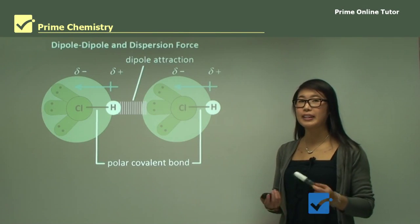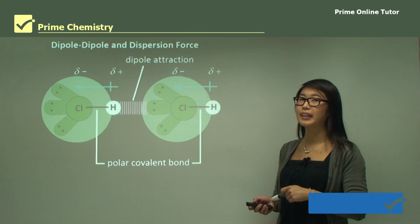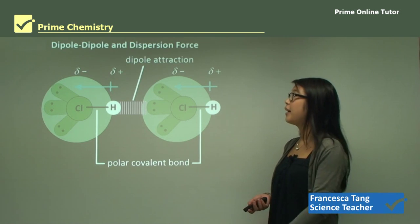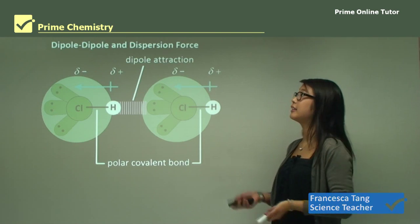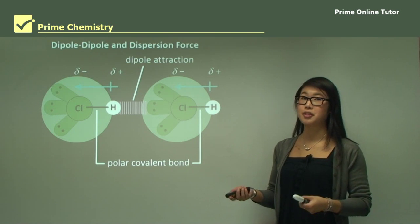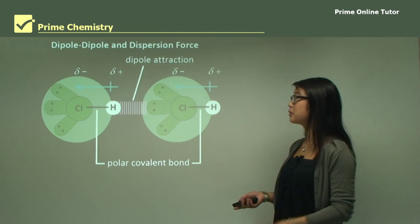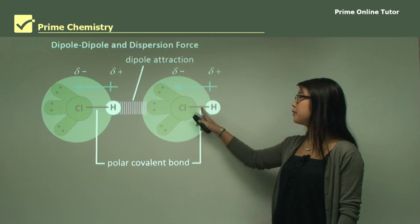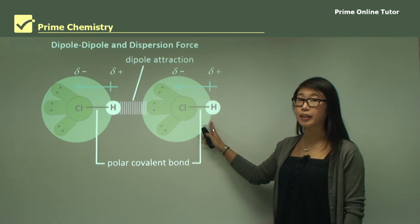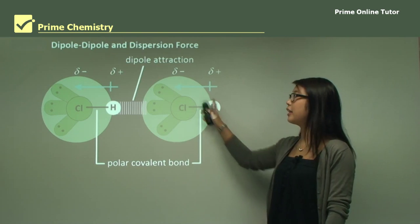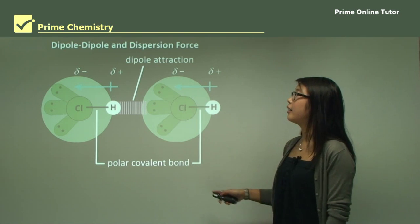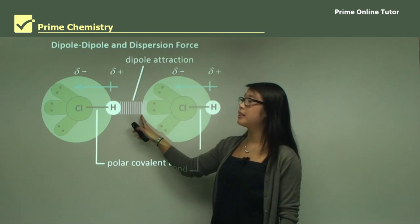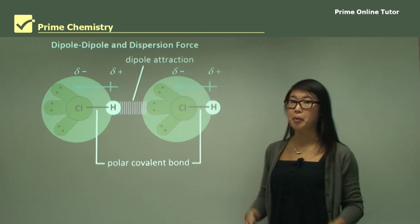Hey everyone. So in our last lesson we were looking at intermolecular forces, so between molecules. We're just going to take that a bit further, looking at dipole-dipole and dispersion forces between molecules. Just remember that polar covalent bonds are not intermolecular — they're intramolecular, so they're inside the molecule. Dipole-dipole and dispersion forces are going to be between molecules.